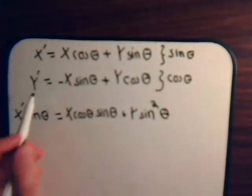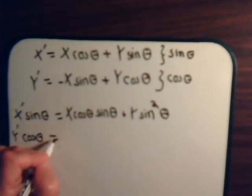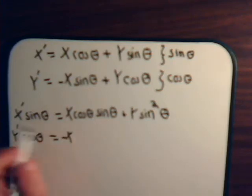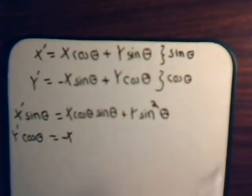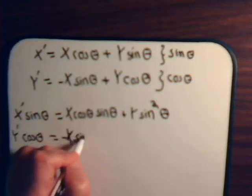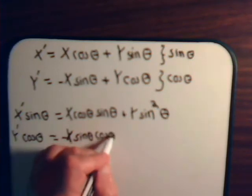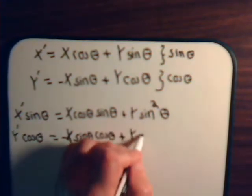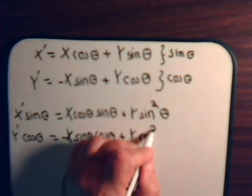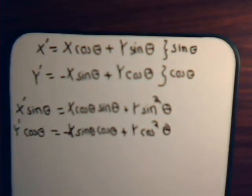And here we will have y prime times the cosine of theta, which equals minus x sine theta cosine theta plus y times cosine squared theta. So we add these together and what do we get?